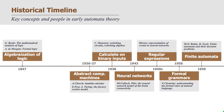In 1959, we have work done by Rabin and Scott on finite automata and their decision problems. This is, in fact, the modern version of automata. The terminology that they proposed in this seminal paper is pretty much what we are also going to follow in this course.